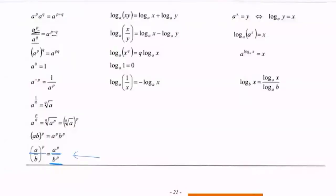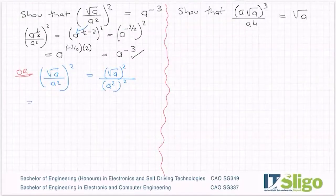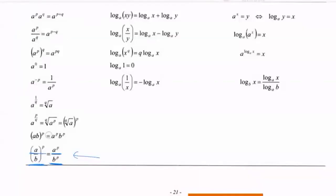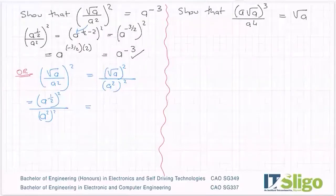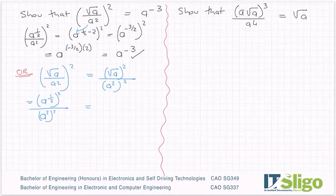Just go back to the rule again — you apply the power to the top, you apply the power to the bottom. So root a is still a to the power of a half, squared, over a squared squared. I'm using rule three again, which is a power to a power. Because I have a to the power of a half by two — it's a power to a power, so I multiply it. So it's a to the power of a half times two over, and on the bottom, it's again a power to a power, so it's two times two.